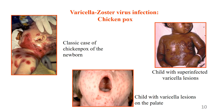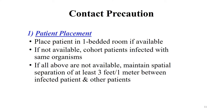Varicella zoster virus infection - this virus causes two types of infections: chicken pox and shingles. Here we will look at chicken pox. Chicken pox can happen in very young children, as young as less than a year old, and can also happen in adults.